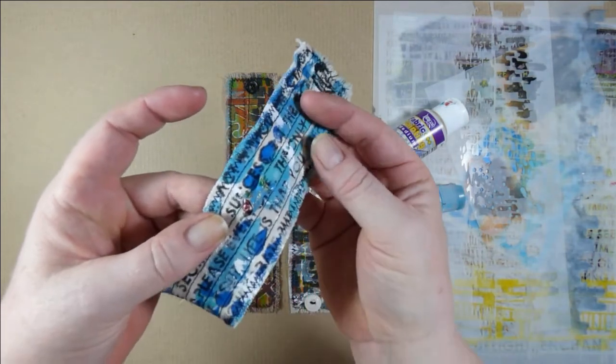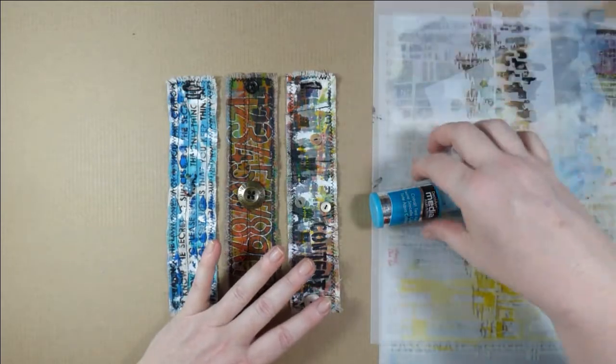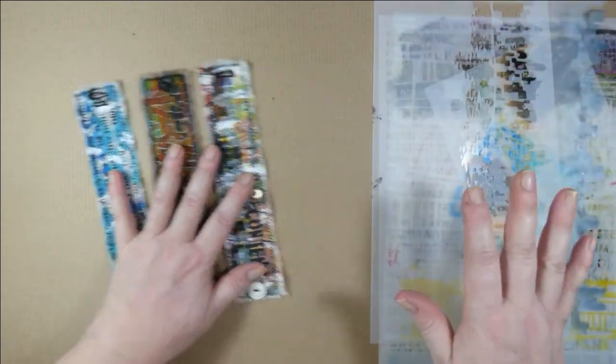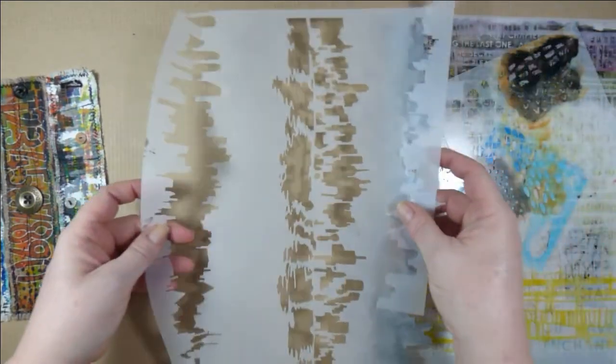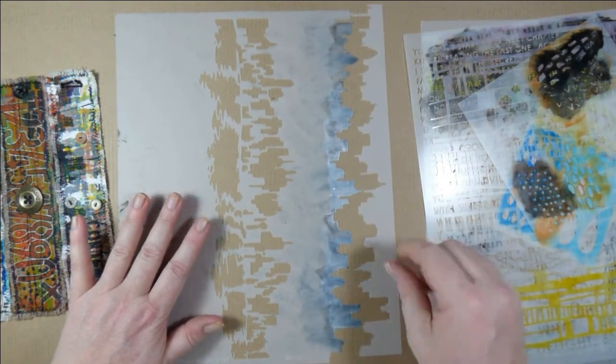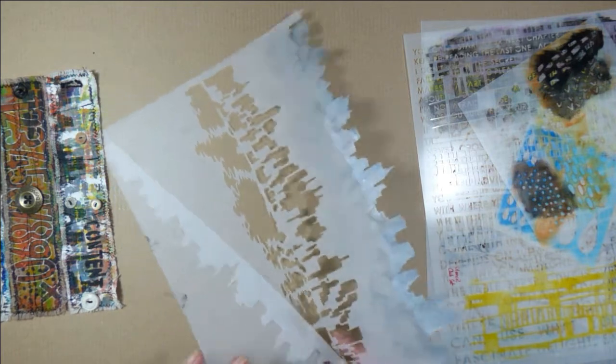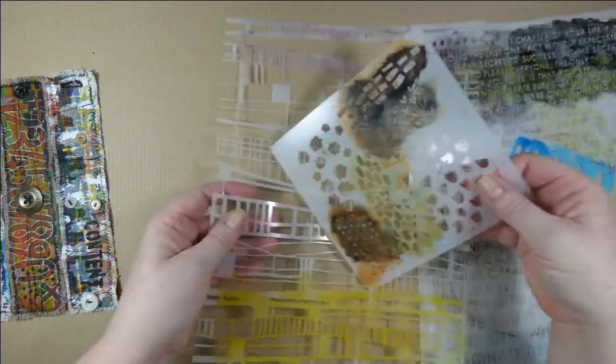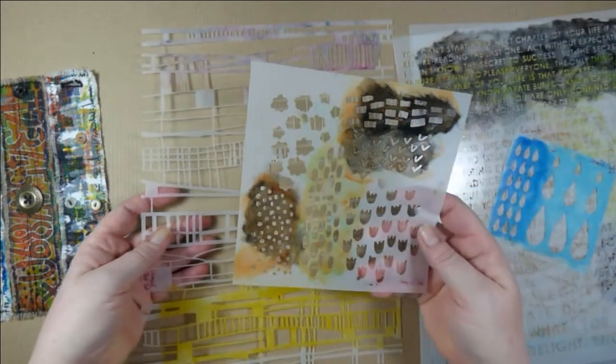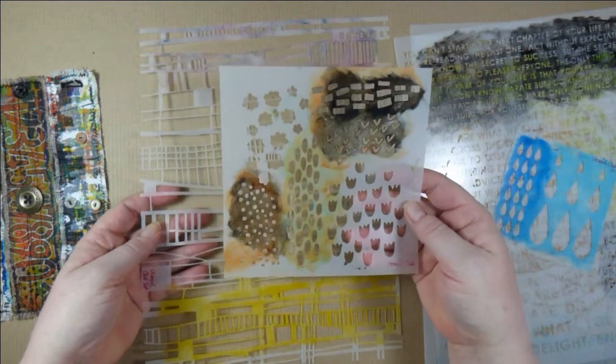I'll also talk about the details I've added because I don't think you can see them on the pictures too well. Let's start with the stencils I've used. I want to show you Andrew Borloz's Cityscape stencil—I really love this one.